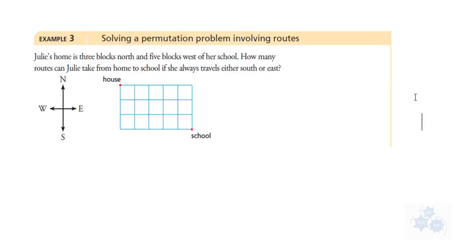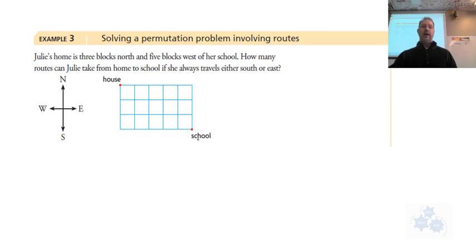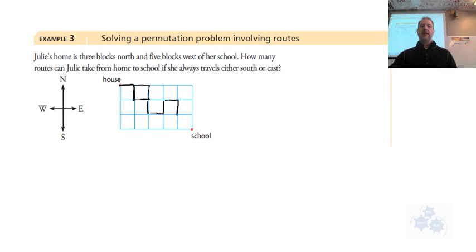The third example involves routes on a map. Julie's home is three blocks north and five blocks west of her school. The grid represents blocks — the house is three blocks north and five blocks west. How many routes can Julie take from home to school if she always travels either south or east? The restriction is she won't double back — otherwise there'd be an infinite number of routes.